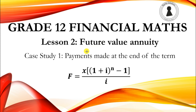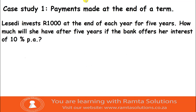Looking at future value annuities, these are where you are saving. So let's get into it. At the end of this lesson you must be able to see how this formula came to be. The first case study is when payments are made at the end of a term. The person we are using is Lisedy. The question says: Lisedy invests R1,000 at the end of each year for five years.